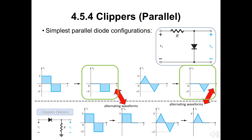On the other hand, the bottom figures are the ones we discussed last week — the serial clipper. The output side of both the square and triangular pulse were alternating with the parallel one. This may be a useful way to understand the difference between the two.